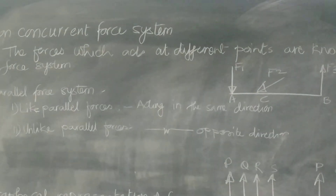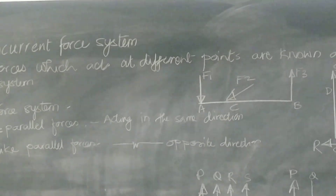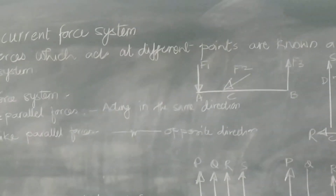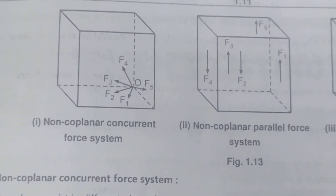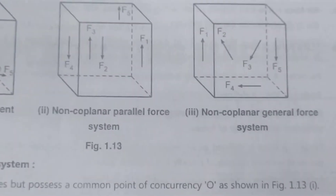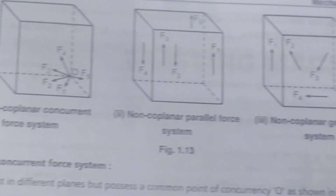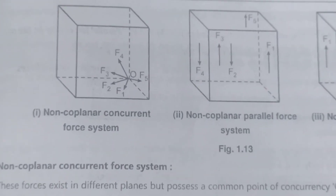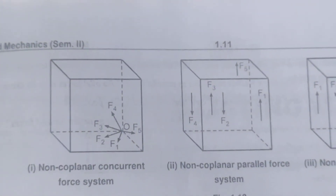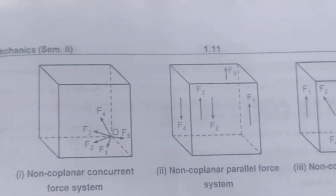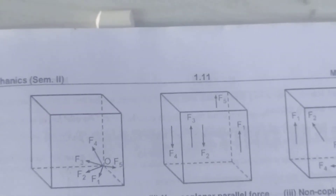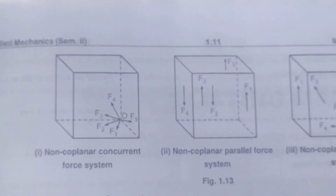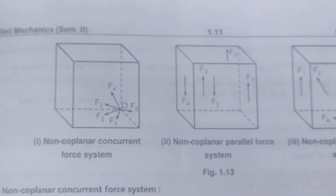There is also a non-coplanar force system, but our scope of syllabus is limited to coplanar force system. Non-coplanar force systems include non-coplanar concurrent, non-coplanar parallel, and non-coplanar general force system. If the line of action of all the forces lie on different planes, the system is called a non-coplanar or spatial force system.